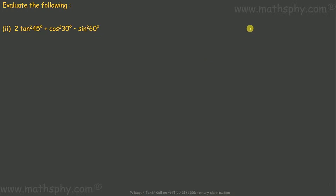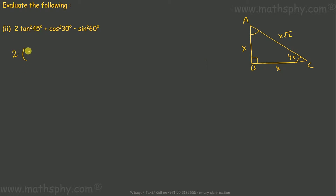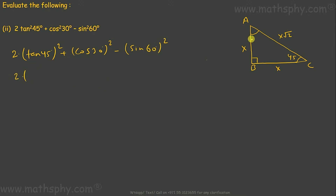This next equation has 45, 30, and 60 — all three. For the 45-degree triangle: A, B, C — this is 45, this is 90. The sides are x, x, and x root 2. The equation is 2 tan squared 45 plus cos squared 30 minus sine squared 60.